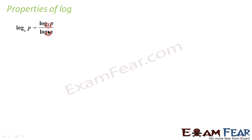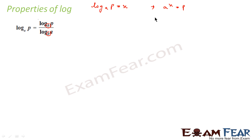For example, if log p to the base a equals x, then we can rewrite that as a to the power x equals p. Now let me take log base b on both sides, introducing a new base. So taking log base b on both sides gives us log base b of a to the power x equals log base b of p.